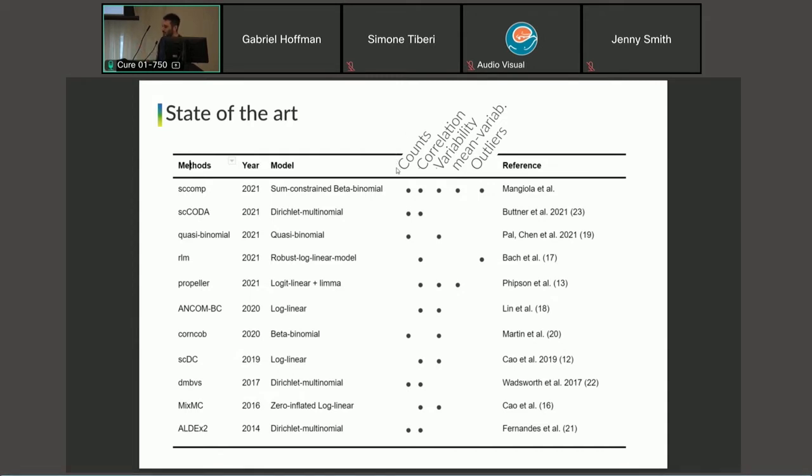Available methods do not jointly model all five properties altogether. This data is observed as counts. These counts underlie proportions, which is a latent variable that is weakly negatively correlated because it's compositional, as it must sum to one by definition. The variability of proportion is specific for each cell type. We have an association between abundance and variability. Data might include outliers and might be prevalent.